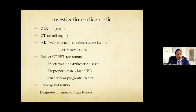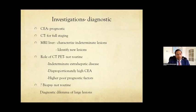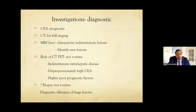All patients with colorectal liver mets must have a full thoracic, abdominal, and pelvic CT — thoracic CT is very important because the second most common site of spread is lung. Regarding MRI liver, now clearly from NICE guidelines, all patients going for liver resection need an MRI. This helps to characterize indeterminate lesions and often picks up more lesions compared to CT. Intraoperative ultrasound remains the gold standard for identifying new lesions, but preoperatively an MRI liver is essential.